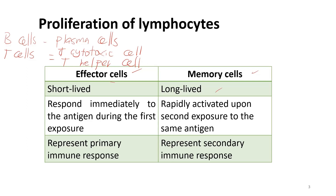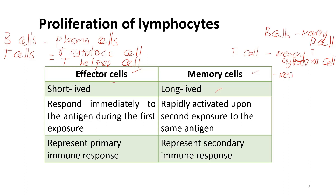Memory cells are long-lived cells that can give rise to effector cells if the same antigen re-infects later in the animal's life. The memory cells for B cells are memory B cells, and for T cells are memory T cytotoxic cells or memory T helper cells. Effector cells respond immediately during first exposure, while memory cells are rapidly activated upon second exposure to the same antigen. The production of effector cells represents the primary immune response, while the production of memory cells represents the secondary immune response.